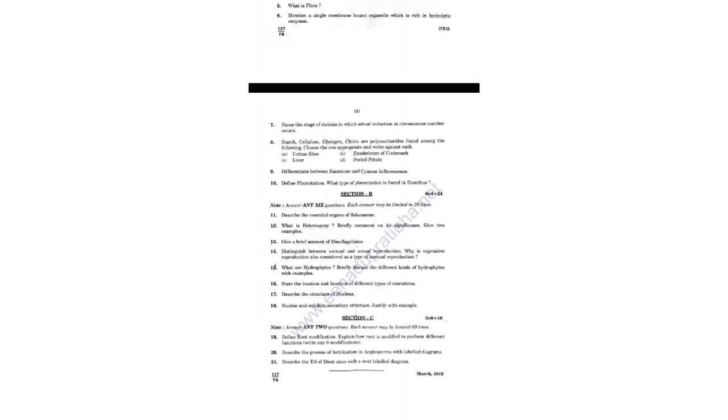Coming to Section B, 8 questions will be given and you have to answer any 6, with each question carrying 4 marks, so 6 x 4 equals 24 marks. Coming to Section C, normally 3 long answer questions are given, each carrying 8 marks, and you have to attempt at least 2, so 2 x 8 equals 16 marks.